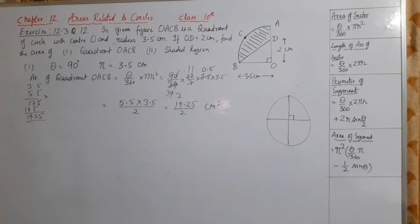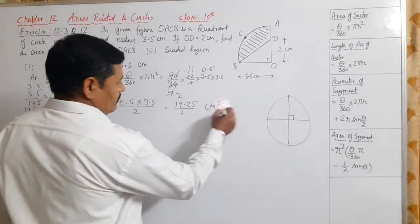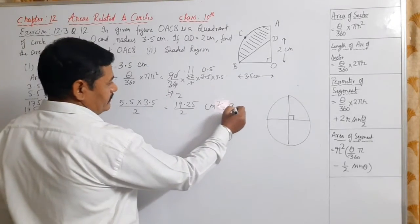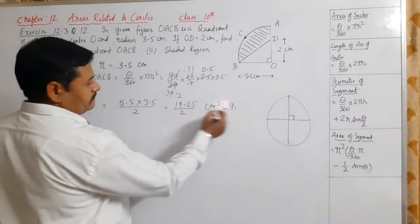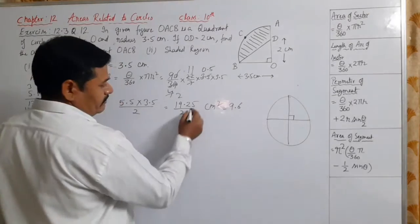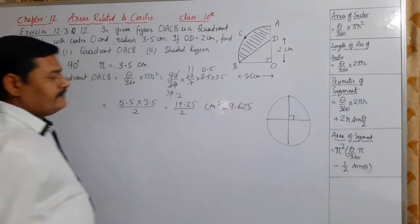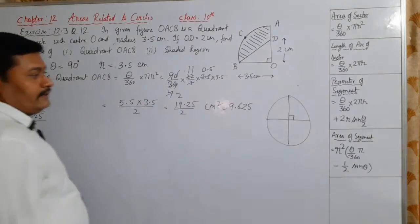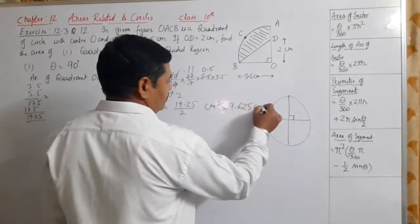The area of this sector is 19.25 divided by 2 cm square. You can further divide it: 2 nines are 18, 2 sixes are 12, 2 twos are 4, and 2 fives are 10, which equals 9.625 cm square.